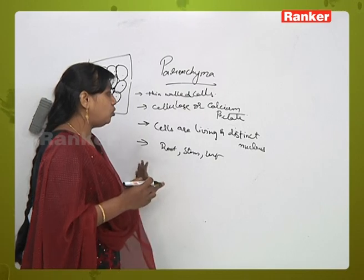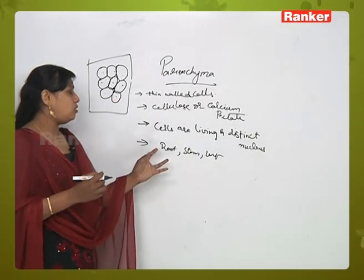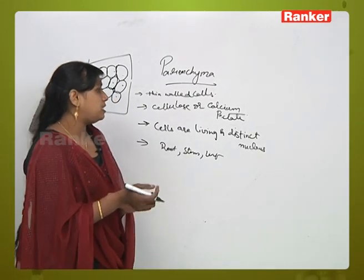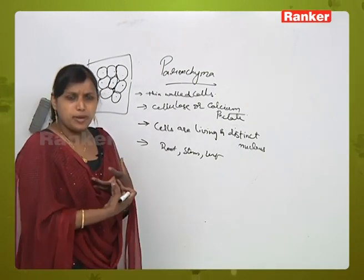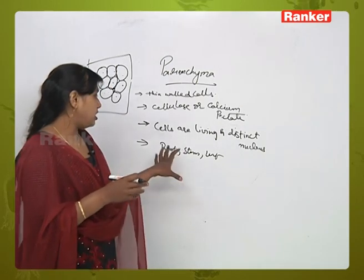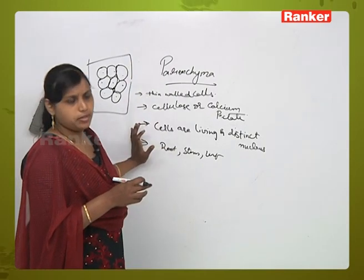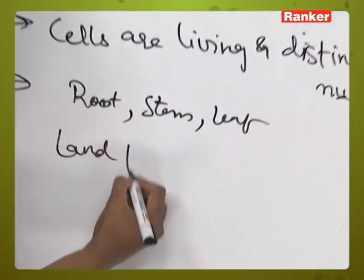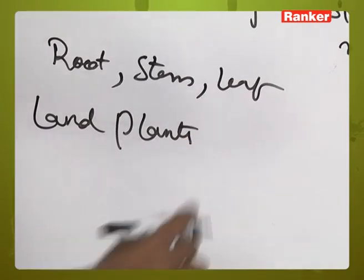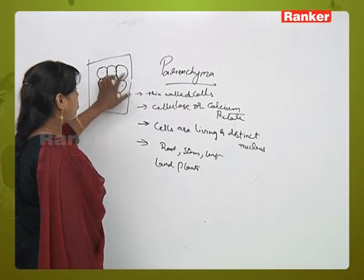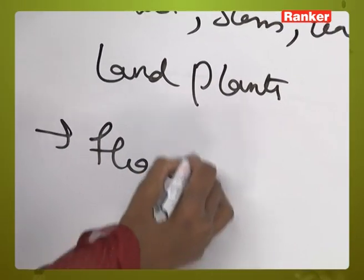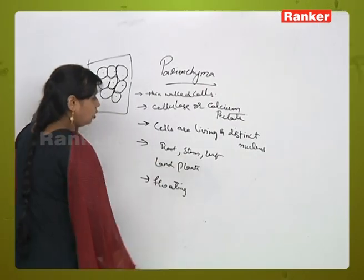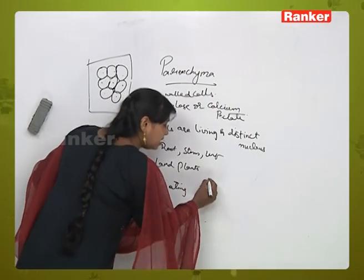In roots, parenchyma constitutes the ground tissue of all parts of the plant. It occupies the cortex, pith, and other regions. In land plants, the parenchyma tissue is round or oval with small intercellular spaces. In floating plants or water plants, the parenchyma has large air spaces.